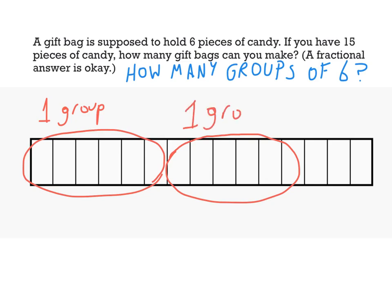It's a little bit difficult to see, wait a minute, I don't have a full group of six here. But I do have half a group of six. I have one, two, three pieces of candy, that's half of the six. So, I want to label that and say that what I have is one half. So I should be able to make two and one half gift bags.